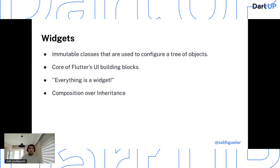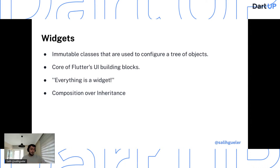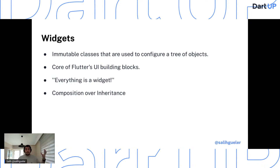Flutter is at its core a series of mechanisms for efficiently walking modified parts of trees, converting trees of objects into lower-level trees, and propagating changes across these trees. Widgets are not alone — we need to keep in mind it's not only widgets all the time. Flutter emphasizes composition over inheritance. Each widget is an immutable declaration of part of the user interface.